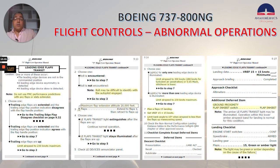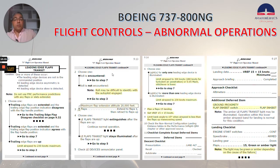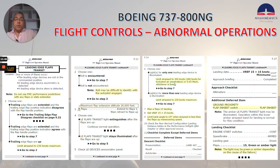If we talk about the leading edge flaps transit non-normal checklist: do not use FMC performance predictions with any flaps or slats extended. Depending on the case, if trailing edge flaps are up, you have to limit airspeed to 230 knots maximum. Check whether you've encountered roll or not — roll may be difficult to identify with the autopilot engaged. In step six, choose one: if the light for only one leading edge device is illuminated, limit airspeed to 300 knots, 280 knots for turbulent air penetration, or 0.65 Mach max — whichever is lower.